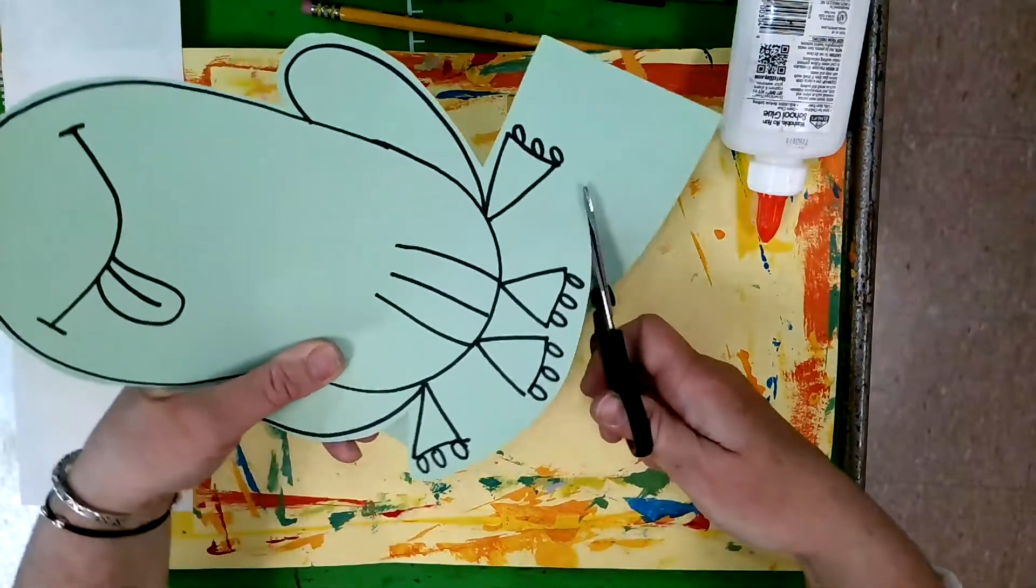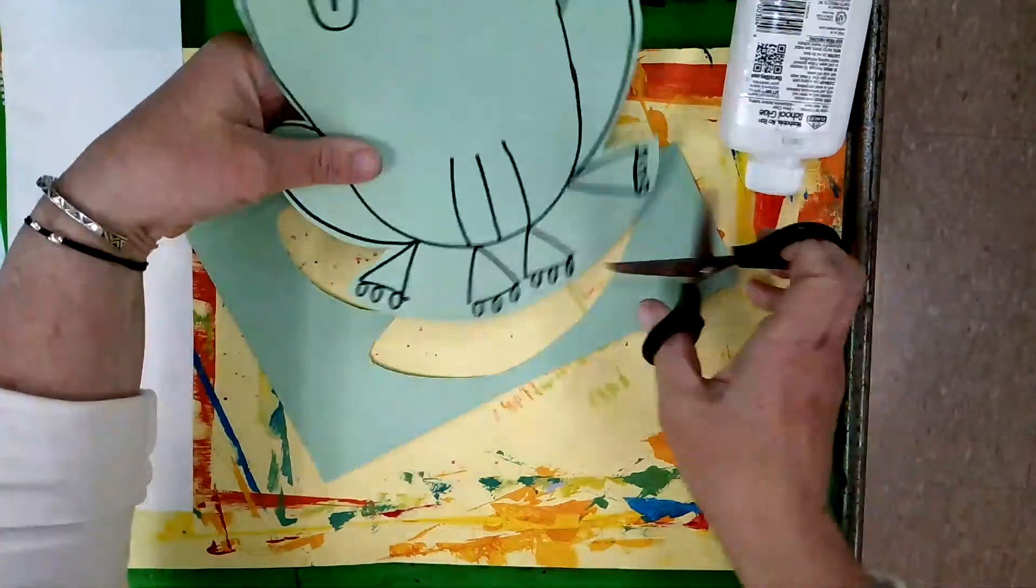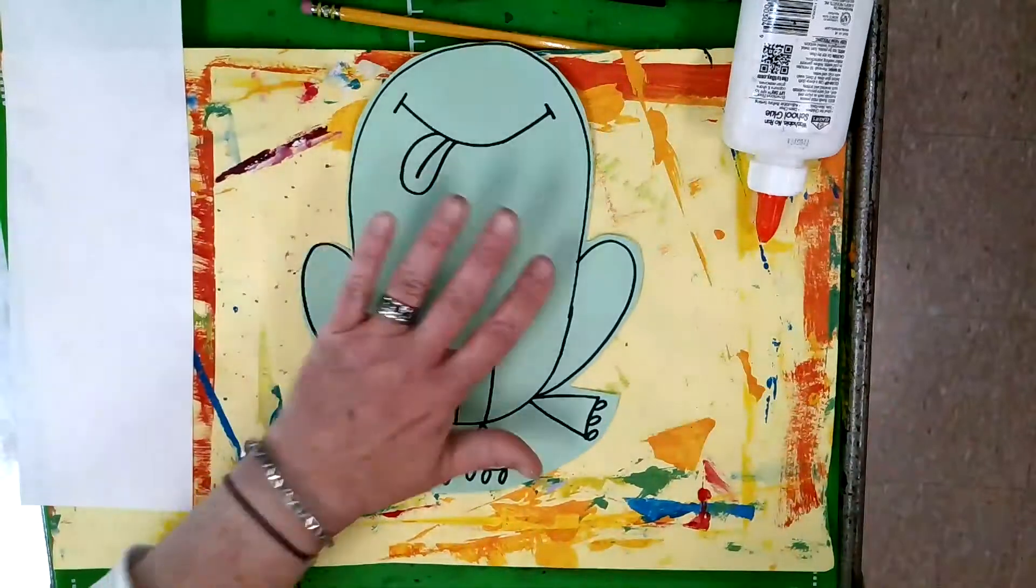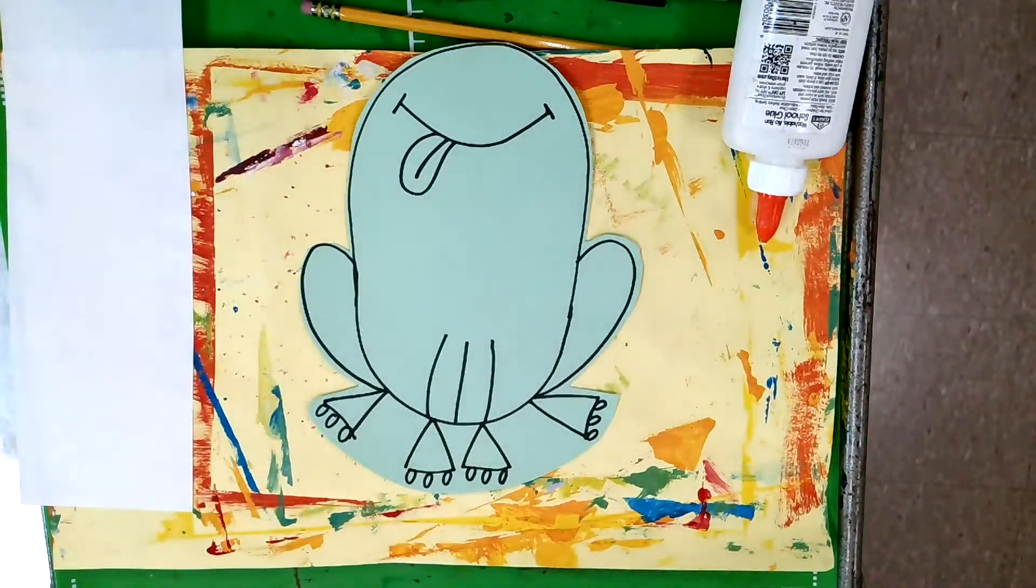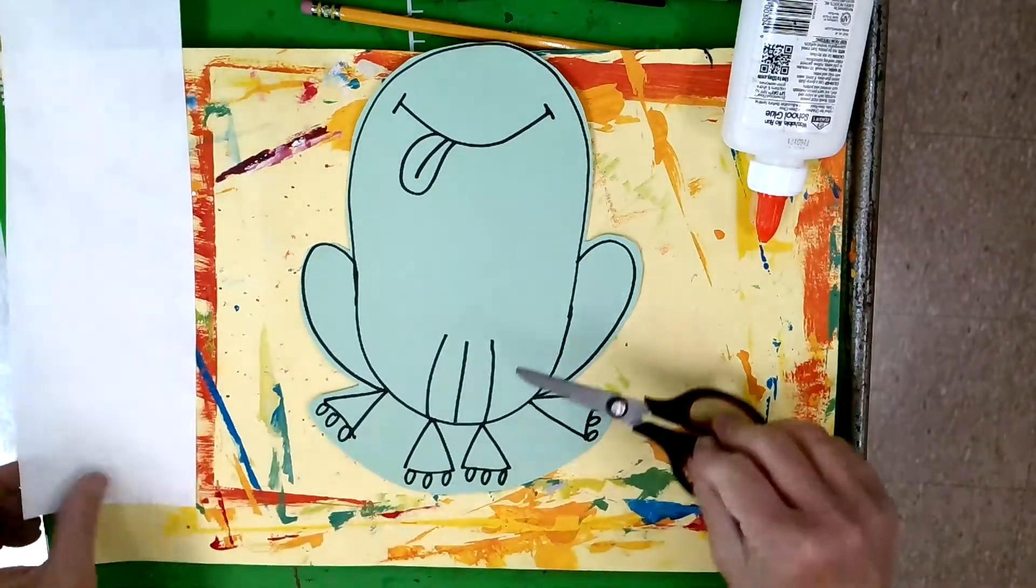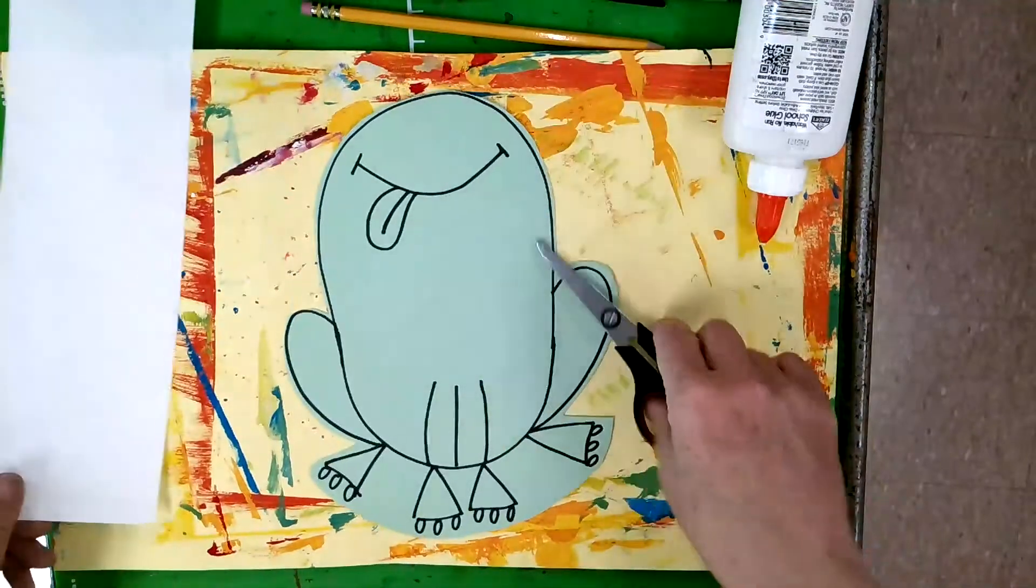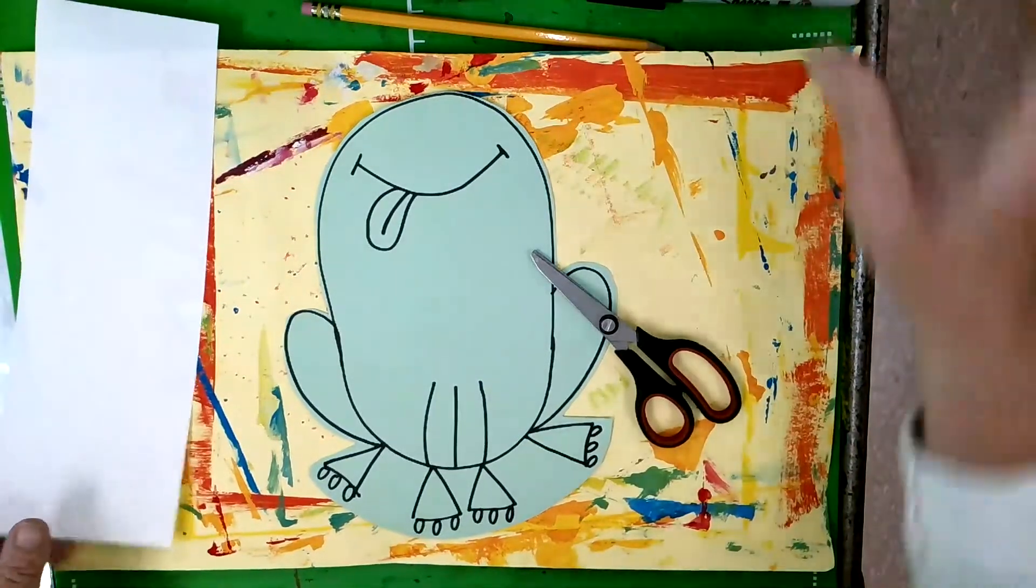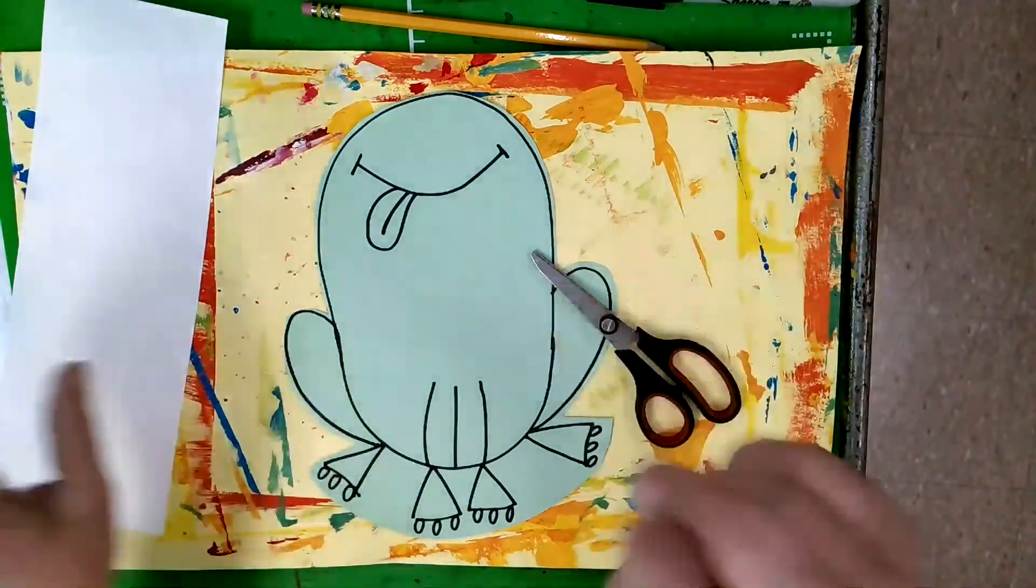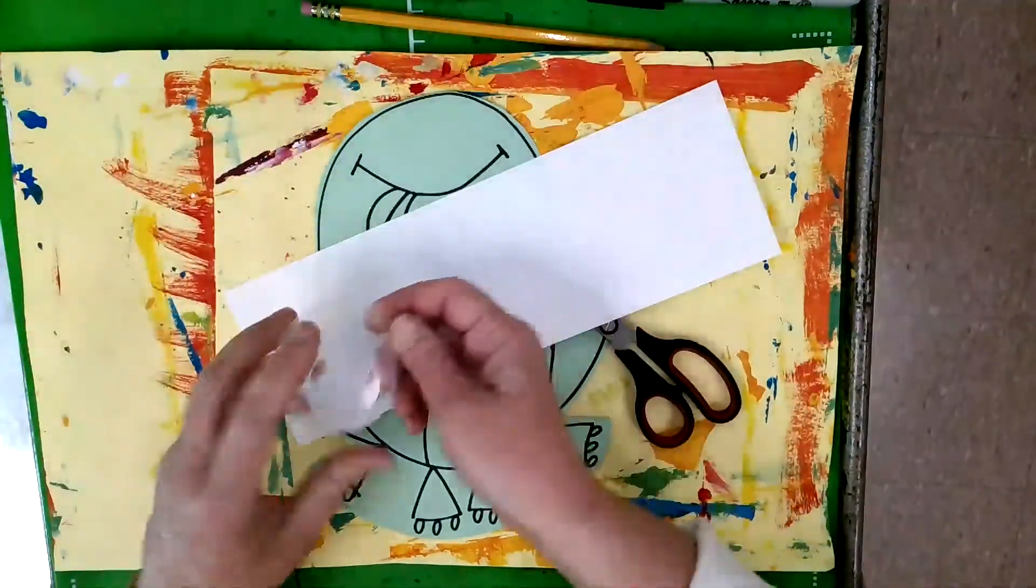Now these toes and these feet can be kind of hard to cut between, so what I'm going to do is I'm just gonna cut around all the feet and then I'm done. Next is the eyes and I have a trick to cutting out circles.